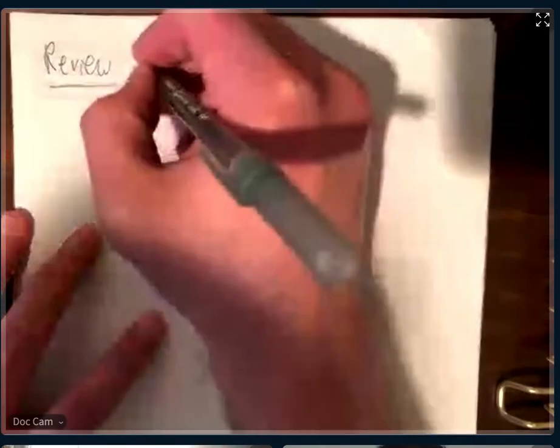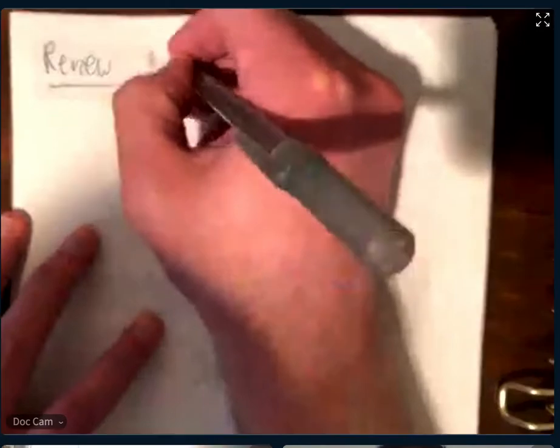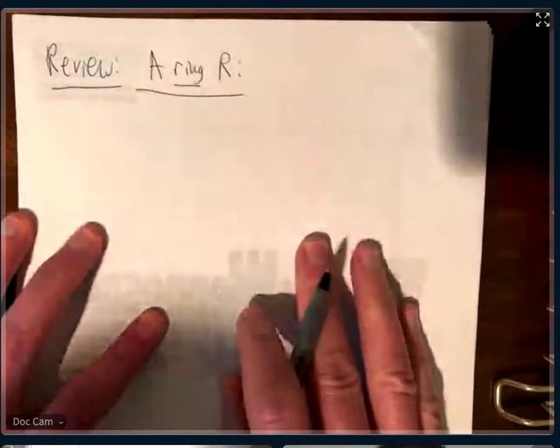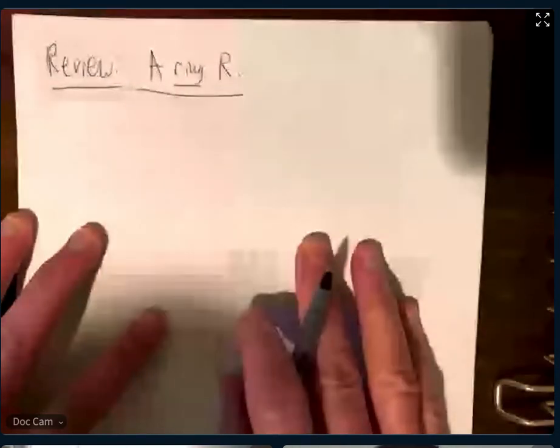Welcome everybody. Let's clear the thumbs up, smiley faces, and sad faces so I can tell when your face turns from happiness to sad and the thumbs go down. Let's go all the way back — it's been about a week and a half since we talked about some pretty heavy stuff. So, what is a ring? Can you write in the chat what you think a ring should be, what it has to have?